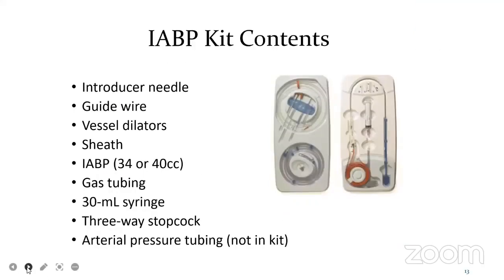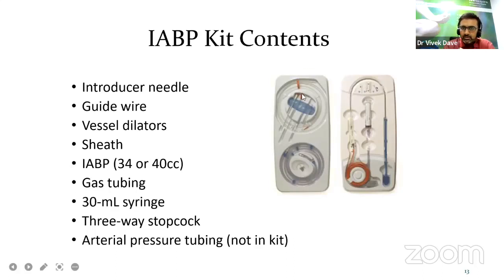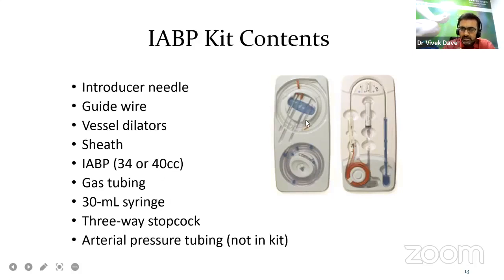This is the kit of IABP. You can see various equipment: introducer needle, guide wire, vessel dilators, sheaths — different sizes are available — gas tubing, 30 ml syringe, and arterial pressure components.